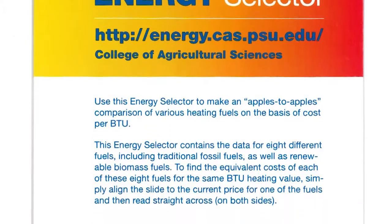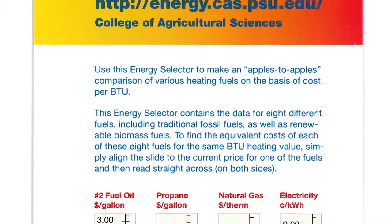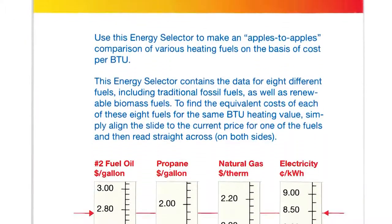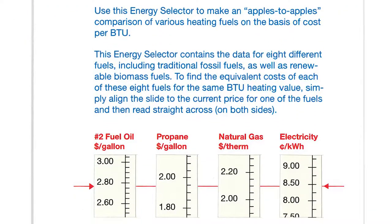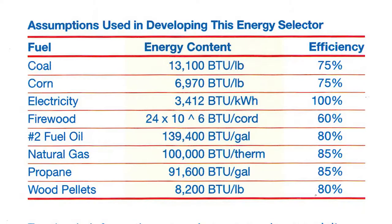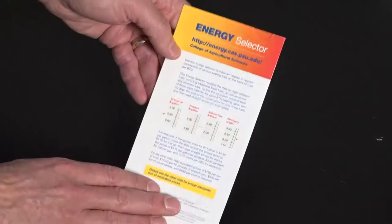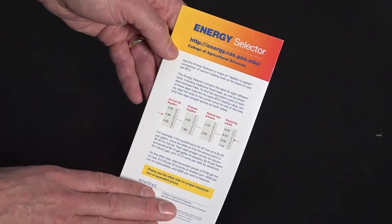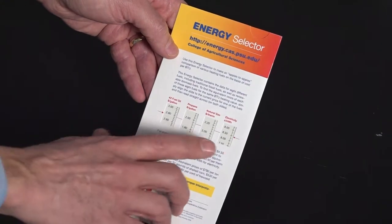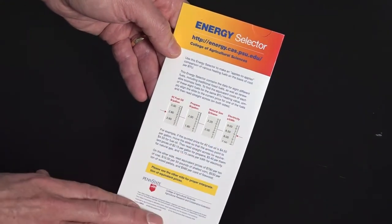This tool automates the process of calculating the energy cost of different fuels, taking into account the different units in which it is sold, the different energy content of each fuel, and the typical efficiency with which it is used.